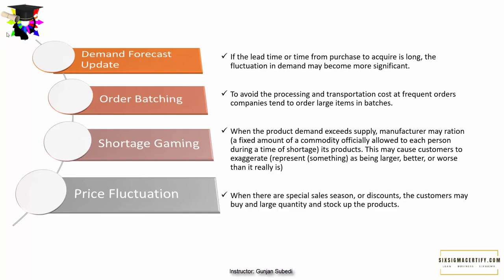The last cause is price fluctuation. When there are special sales seasons or discounts, companies already have products stored up. When prices return to normal, customers stop buying. The buying pattern then doesn't match the consumption pattern, which creates problems in determining real demand across the entire supply chain.